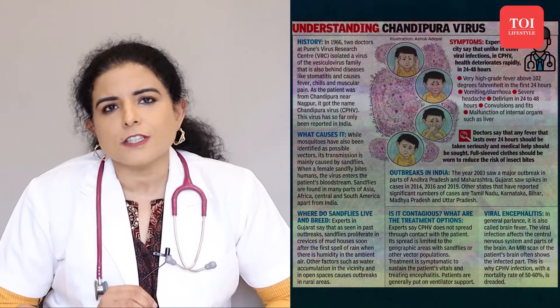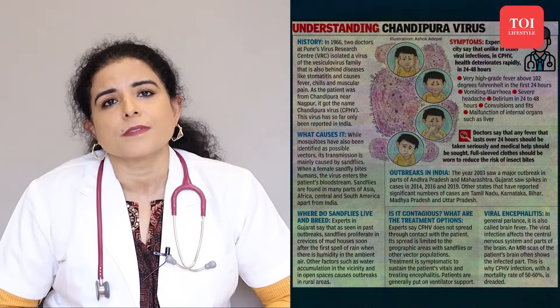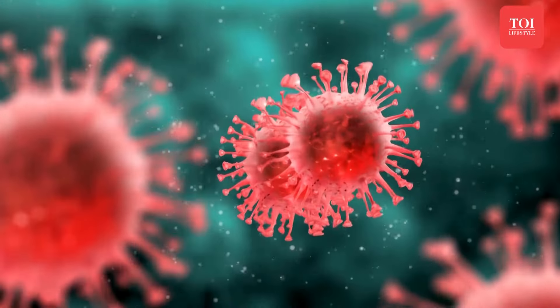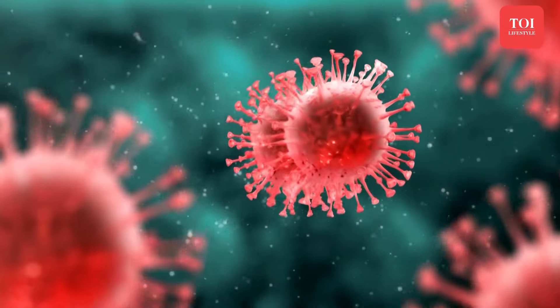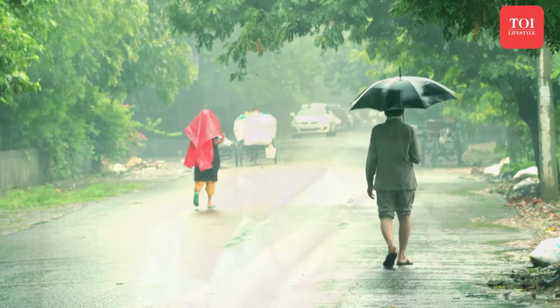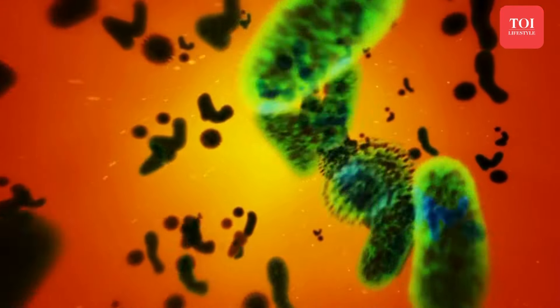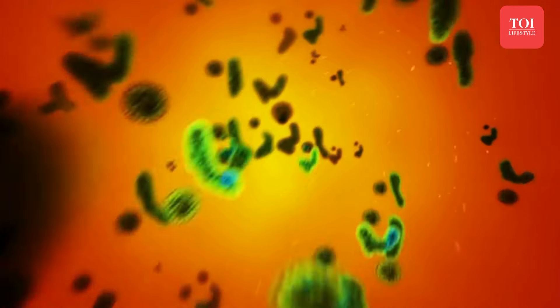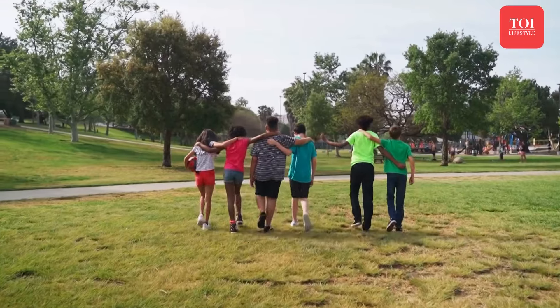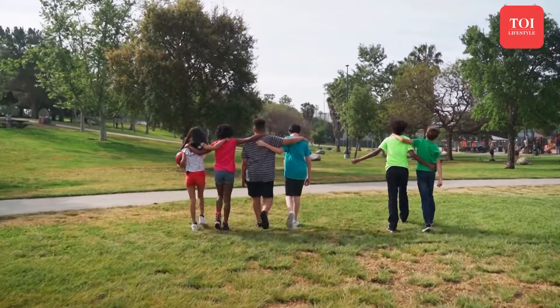This is not the first time that the Chandipura virus outbreak has happened in our country. Earlier too, sporadic outbreaks have been noticed in central India. These outbreaks usually coincide with the pre-monsoon and the monsoon season because the vectors, primarily the phlebotomine sandflies, are more prevalent during this time. Poor air quality, poor sanitation, and poor environmental hygiene also contribute to the outbreak.